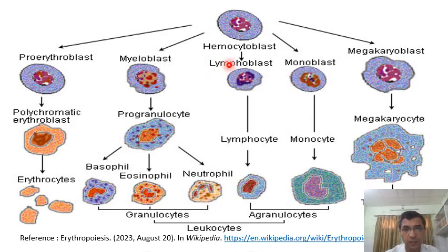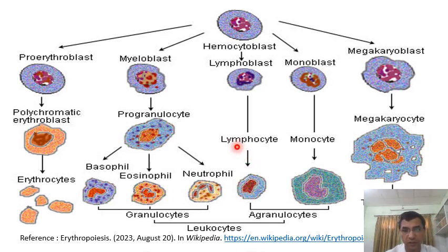In the case of the lymphoblast, it undergoes mitotic divisions with the help of some mitogens or interleukins, and then becomes lymphocytes. The maturation of these lymphocytes determines their nature. If the lymphocytes mature in the thymus gland, they become T lymphocytes. If they mature outside the thymus gland, they become B lymphocytes. The T lymphocyte is responsible for cell-mediated cytotoxic activity. When an antigen enters the body, B lymphocytes differentiate into plasma cells, and those plasma cells produce antibodies for the specific antigen — this is known as the humoral immune response.